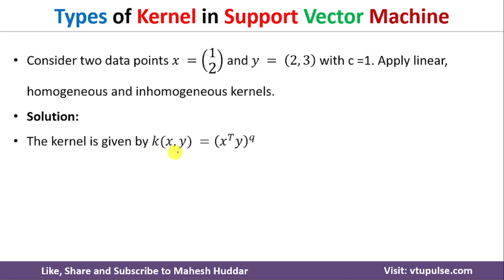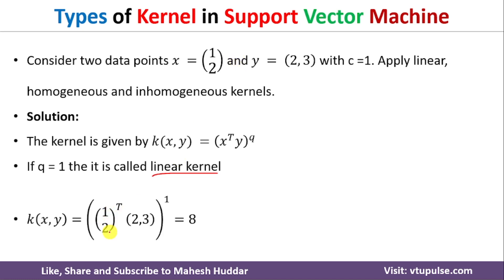The linear kernel has q equal to 1. Substituting the values: x transpose y = [1, 2] transpose dot [2, 3]. Taking the transpose of [1, 2] turns the column into a row, and then we compute the dot product: 1×2 + 2×3 = 2 + 6 = 8. So the value of the linear kernel is 8 for these two data points.